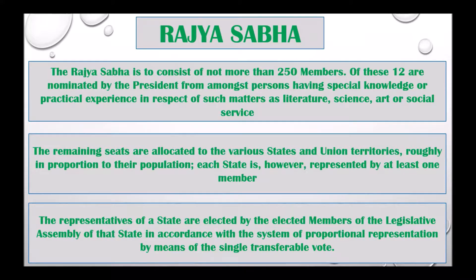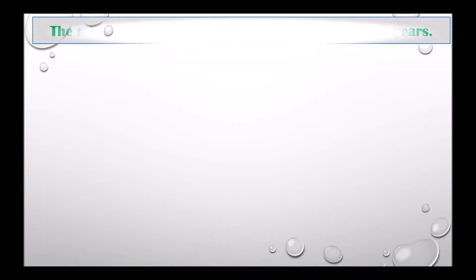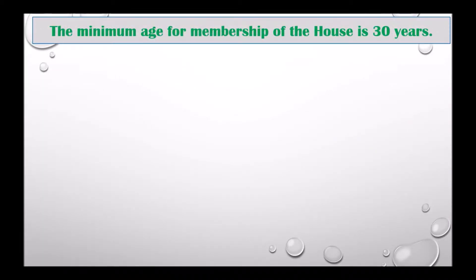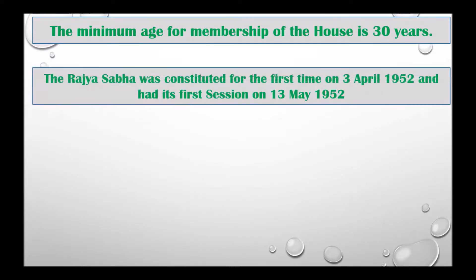The representatives of a state are elected by the elected members of the Legislative Assembly of that state in accordance with the system of proportional representation by means of the single transferable vote. The minimum age for membership of the house is 30 years. The Rajya Sabha was constituted for the first time on 3rd April 1952 and had its first session on 13th May 1952.